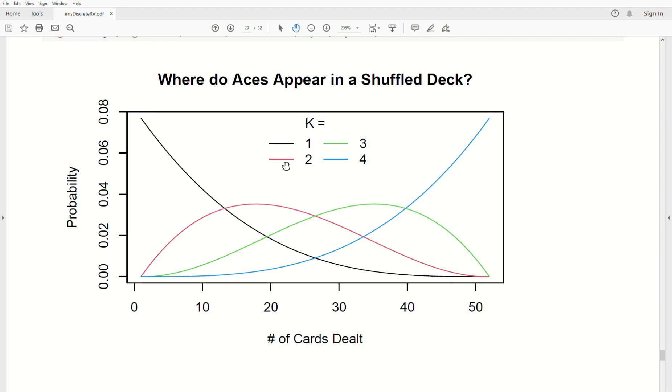The probability that the second ace is dealt on a specific card is this red line. Notice the second ace has highest probability of being dealt in here. Third ace—the probability that the third ace is dealt on a specific card has highest probability in here. The fourth ace, which I find interesting also, has highest probability of being dealt on the 52nd card.